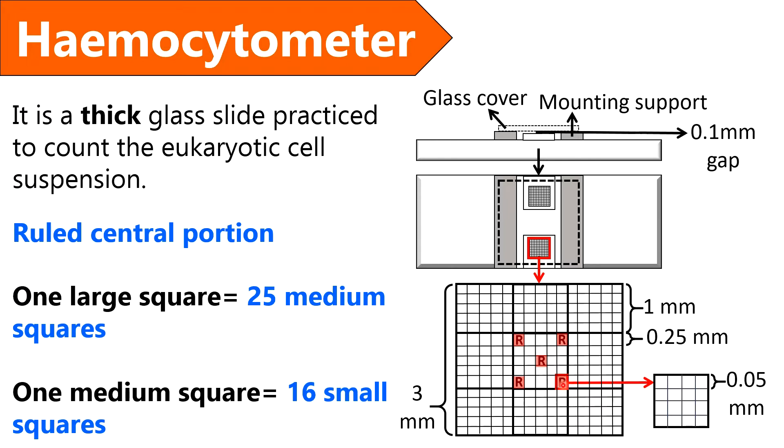To count RBCs, only this central large square is focused under the microscope. Here the letter R represents the area to count red blood cells.